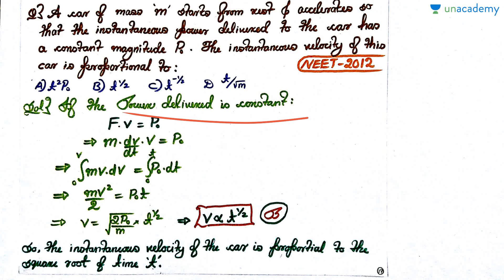Power delivered is constant. We know that power is force into velocity. So F·v is constant and equal to P₀. Force can be written as mass into acceleration, and acceleration as M·dV/dt. Writing it in this form, taking dt on the other side and integrating on both sides, I get Mv²/2 = P₀t. This is kinetic energy equal to energy delivered in time t. From here, velocity comes out to be √(2P₀t/M), or v ∝ t^(1/2). So option B is correct. The instantaneous velocity is proportional to the square root of time t.